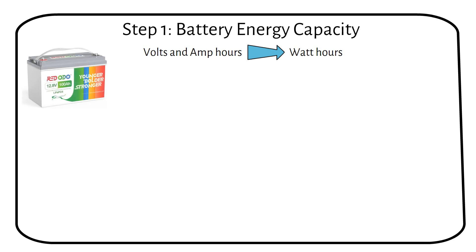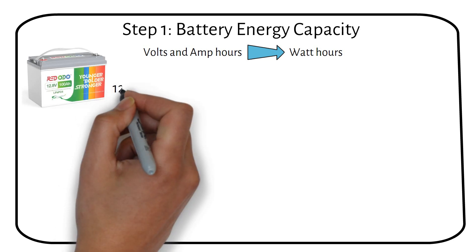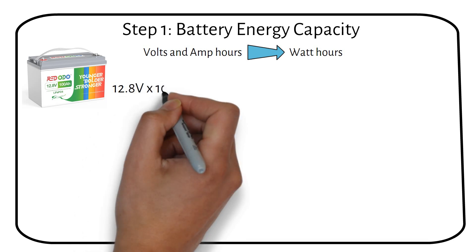A 12V 100Ah lithium battery has a nominal voltage of 12.8V. Multiplying this by the battery capacity, we get 1280 watt-hours.